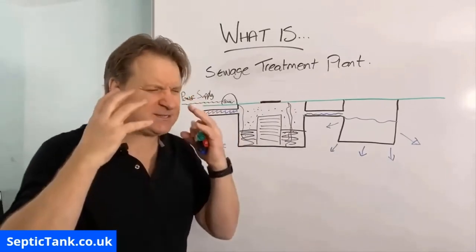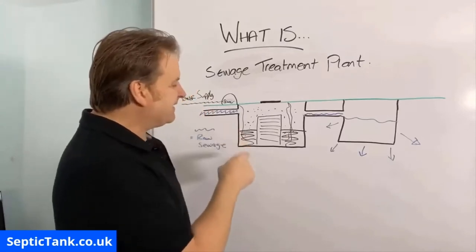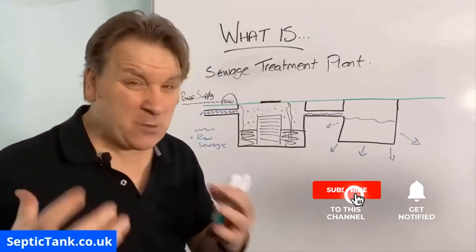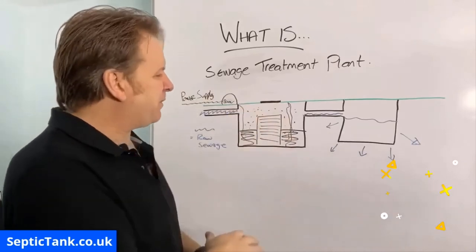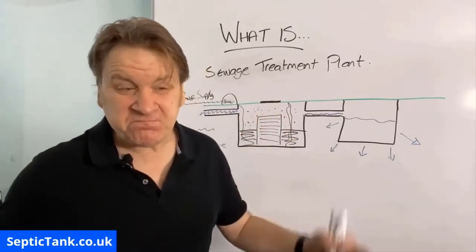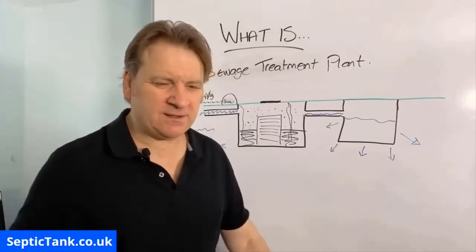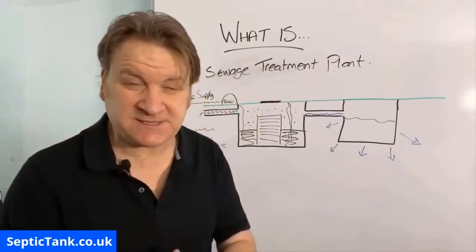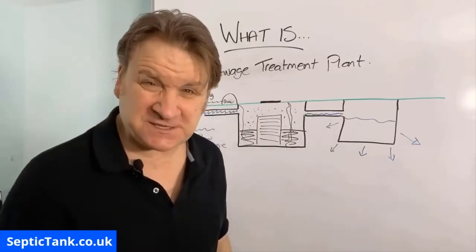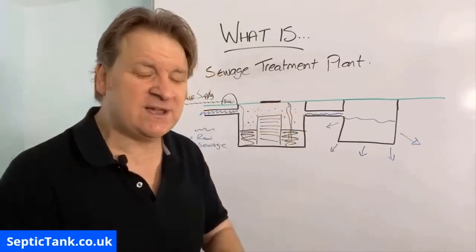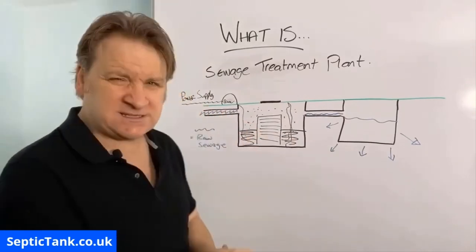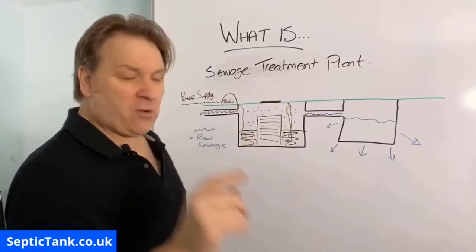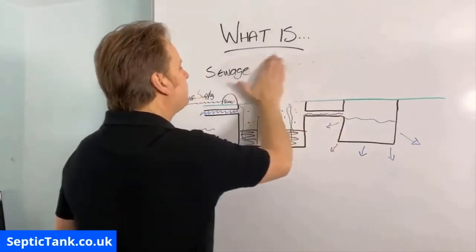There are a lot more moving parts in a treatment plant — compressors, motors, cogs, bearings, pulleys, shafts — loads of things to go wrong. Electric and water just don't mix. Typically a sewage treatment plant only comes with a 12-month warranty, and unless you get it serviced every year by an approved contractor the warranty is null and void. That's what a sewage treatment plant is.